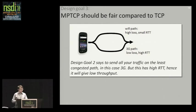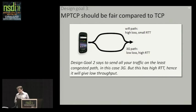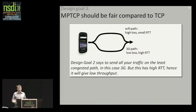Moving on to design goal three, which highlights an interesting problem with design goal two. Let's think about the mobile device scenario — a choice of two paths with different characteristics. In our experiments, we found that on the Wi-Fi interface we typically had high-ish loss and small RTT, while on 3G we had low loss but a very large RTT, presumably because the 3G protocols are doing lots of retransmissions and need a large buffer to hold packets.